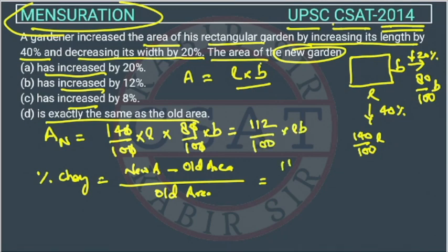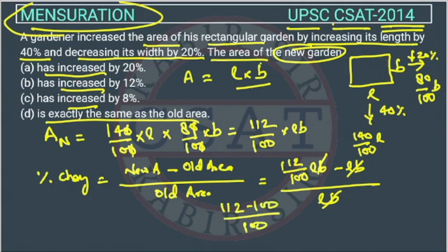We will put this value here. So this is 112 upon 100 LB minus old area is LB. We will take LB common and cancel it out. This will become 100 upon 100, so this will be 12 upon 100.